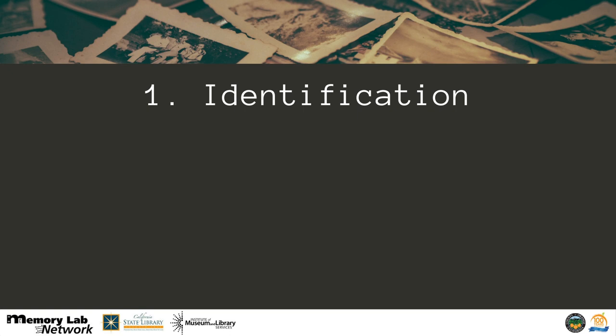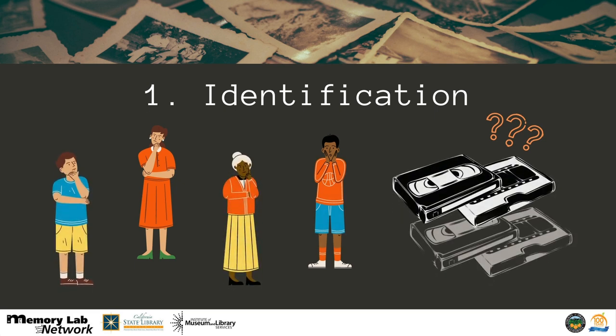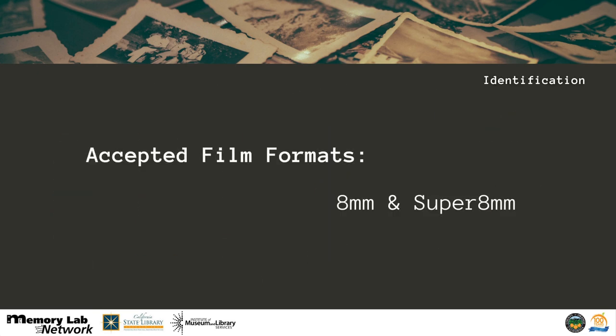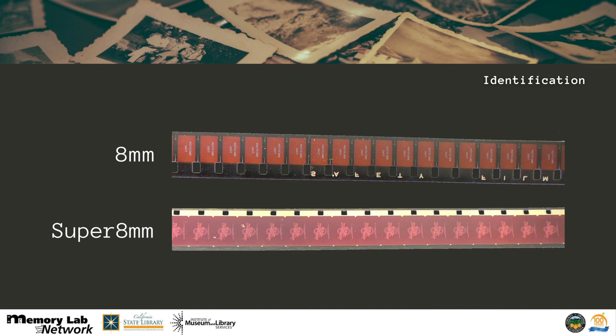Identification is where you need to identify what you have, where you have it, and what formats they are in. Inheritors of home movies typically find themselves with a large quantity of unlabeled film and videotapes. Before you embark on digitizing, you should take a moment to preview your collection so that you can note the content, identify the footage of most significance to you, and arrive at a plan for both access and preservation needs. You need to find out what formats you have, as this will help you determine where you can preview your home movies.